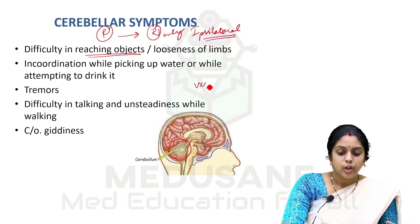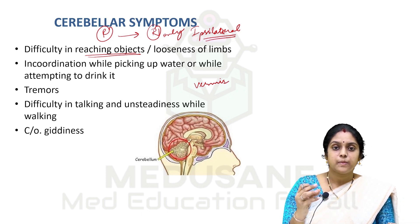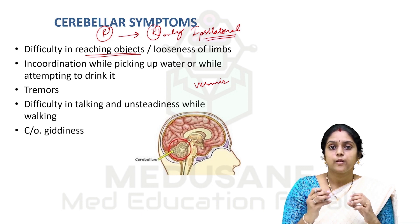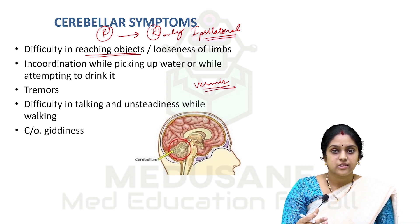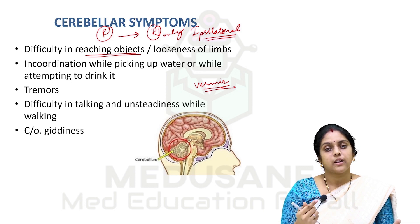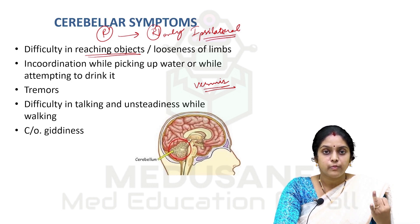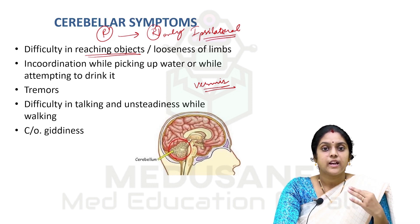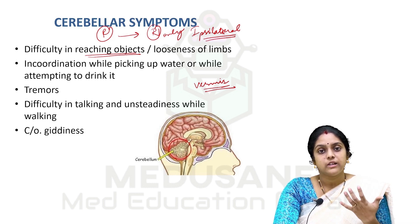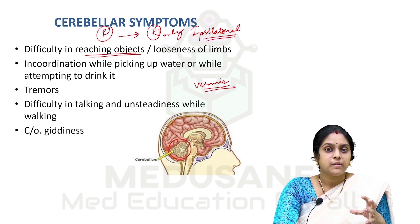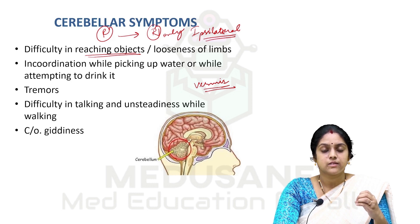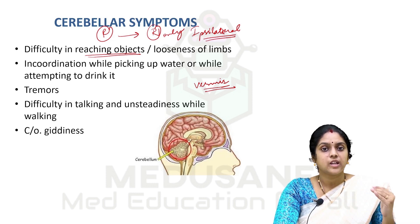These complaints are very characteristically seen in cerebellar involvement, especially involvement of the vermis. The cerebellum has two parts — the cerebellar hemispheres and the vermis. When the vermis is involved, balance is lost, and the patient will have unsteadiness, giddiness, and all these complaints. So when thinking about cerebellar symptoms, we think of incoordination, movement disorder, tremors, difficulty in talking, and unsteadiness or giddiness. The cerebellar system is very commonly used as a short case, so we need to get this clearly in mind.